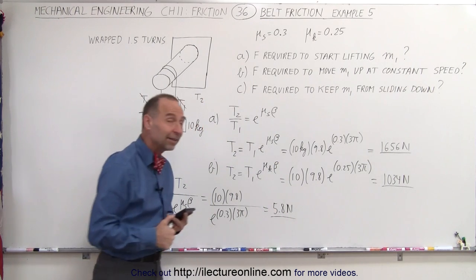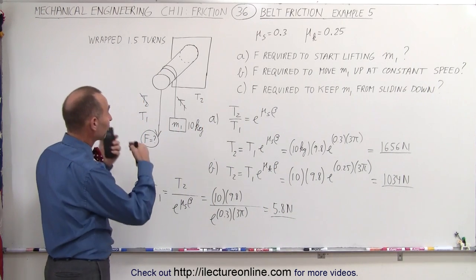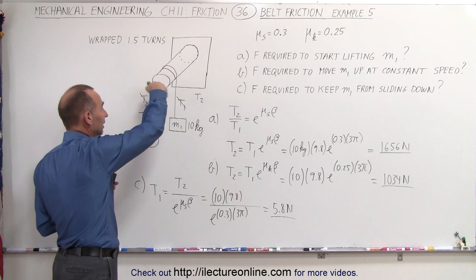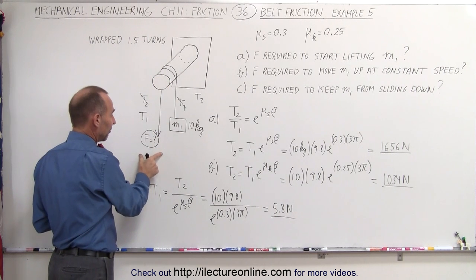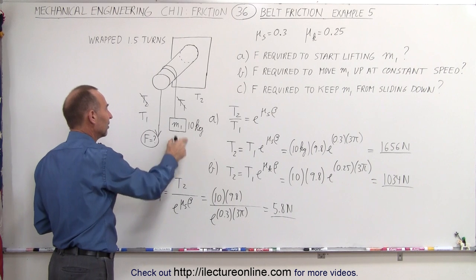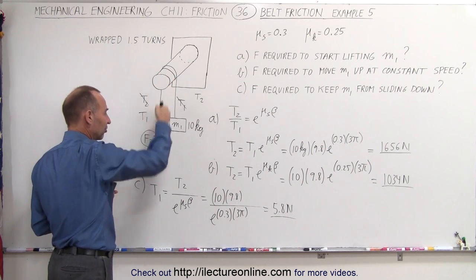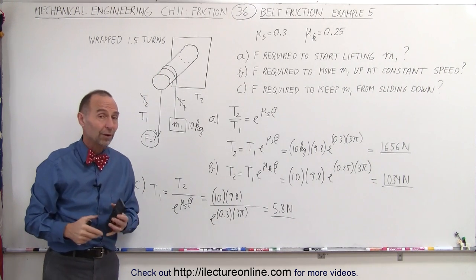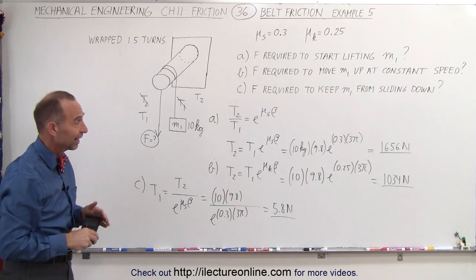So you can see that since there's so much friction between a rope and a peg like that, we only need a force of 5.8 newtons to keep a 10-kilogram object from sliding down. Since this is not a pulley, there's lots of friction there, and not a lot of force required to keep it from sliding. And that's how it's done.